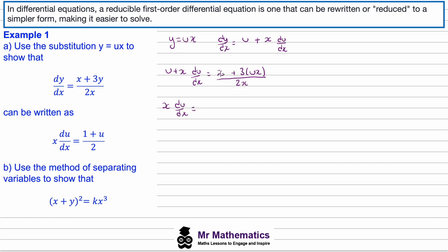The x's cancel, giving 1 plus 3u over 2 minus u. We write the u with a common denominator of 2, giving 1 plus 3u minus 2u all over 2. Simplifying, 3u minus 2u is just u, so x du/dx equals (1 plus u) over 2. This is the form we were asked to find.